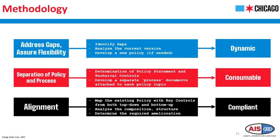Second is about making a consumable document. In order to do so, the city is approaching a revision to separate the policy from the process. Specifically, we are planning to identify which statements are policy statements and which are technical controls. By doing so, we can develop separate process documents — mainly referenced by relevant stakeholders such as ITSCs — for each policy topic. This provides a faster way to reference the policy and implement sufficient controls, while reducing the actual contents of the policy itself, making it more consumable regardless of your role within local government.